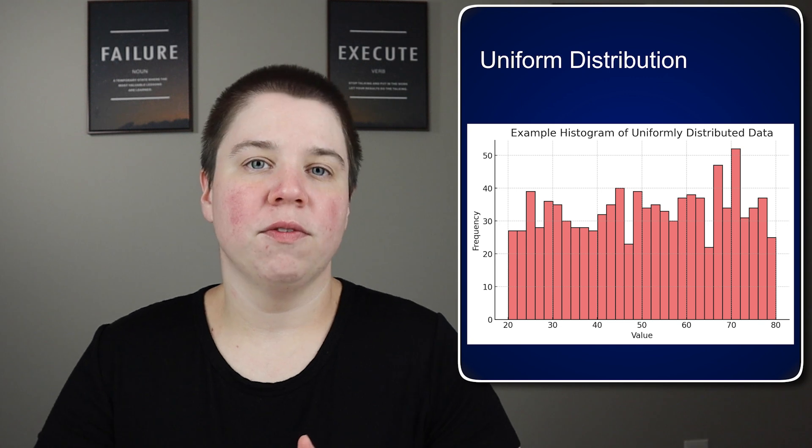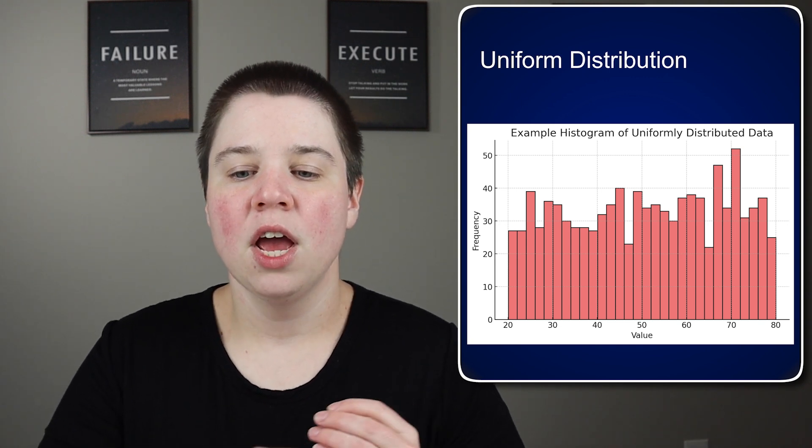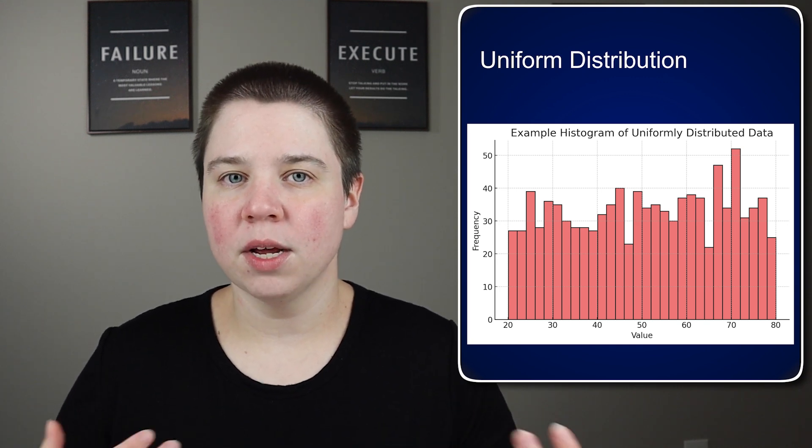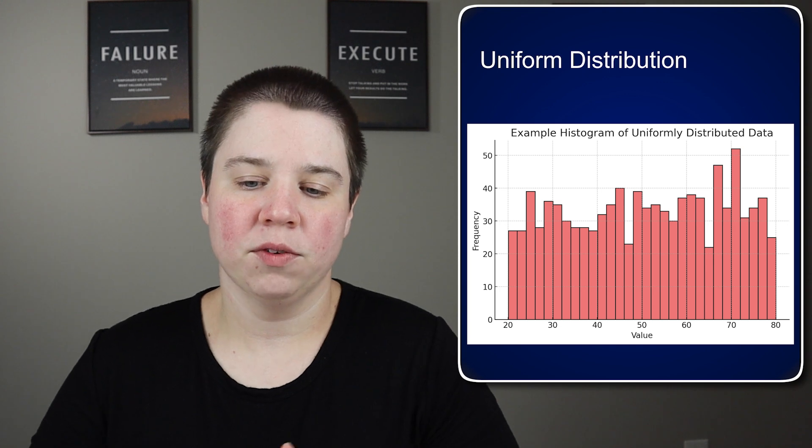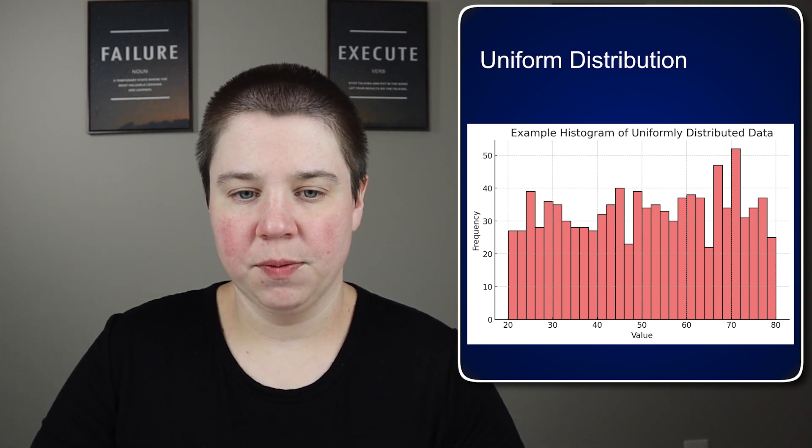I'm going to walk through what a few of these distributions look like. This is an example of a uniform distribution. You can see that across the different values, there is some randomness to this data, but overall they're around similar frequencies, probably around 30 frequency for each given value.